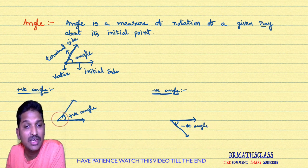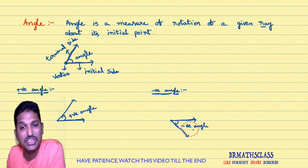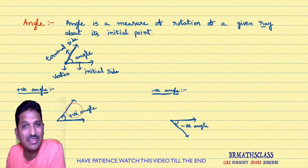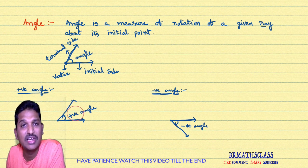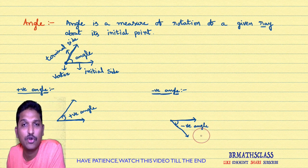So here, this angle is measured as theta and this angle is measured as minus theta. For example, the anti-clockwise angle can be plus 30 degrees, plus 45 degrees, 60 degrees, like that. The clockwise angle is minus 30 degrees, minus 45 degrees, like that.